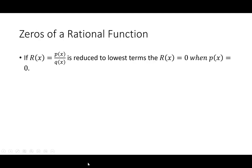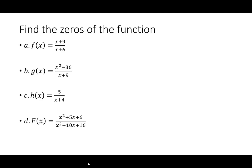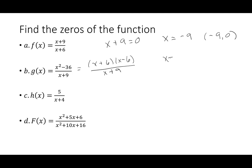The last piece: zeros of a rational function. For r(x)=p(x)/q(x) in reduced terms, r(x)=0 wherever p(x)=0. The bottom tells you vertical asymptotes; the top tells you zeros. For f(x)=(x+9)/(x+6): it's already reduced, so x+9=0 gives x=-9. Write this as the intercept (-9, 0). For f(x)=(x+6)(x-6)/(x+9): nothing cancels, so x=-6 and x=6, written as (-6,0) and (6,0).